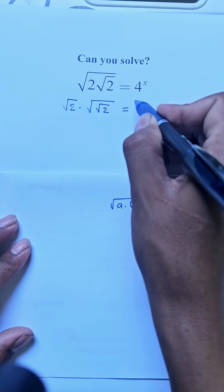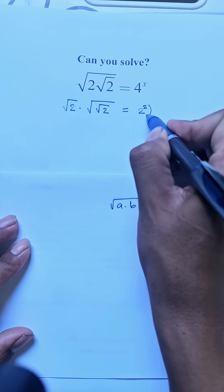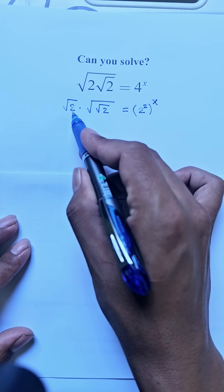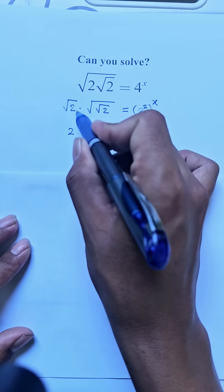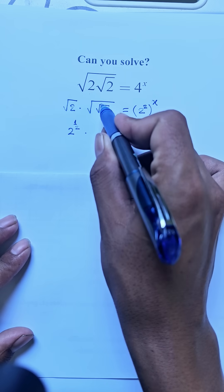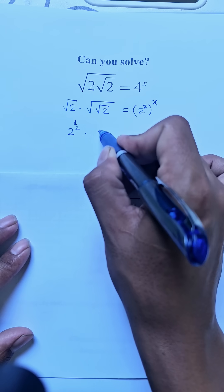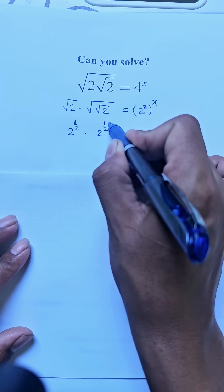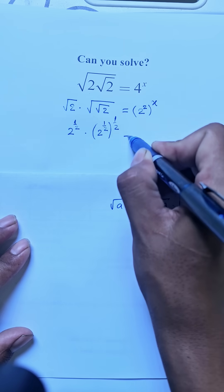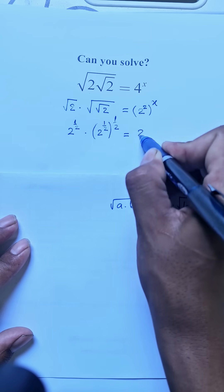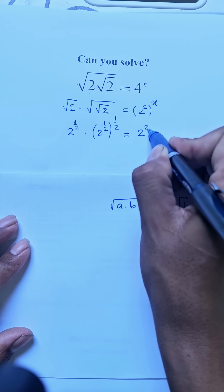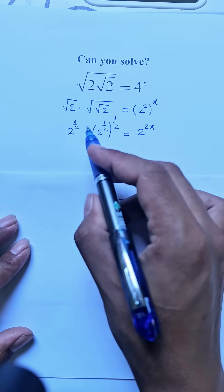This equals 4, or equal to 2 squared to the power a. Here we get 2 to the power 1/2, and 2 to the power 1/2, held to the power 1/2, equal to 2 to the power 2a. We get 2 times a here.